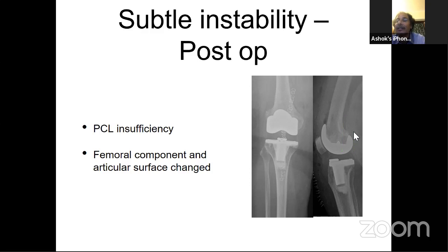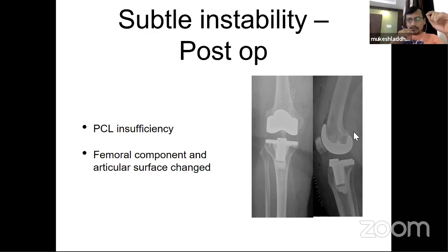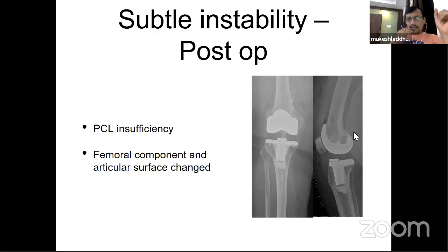I saw her about six weeks ago just before the COVID situation and she's really very happy with her outcome. One of the things I want to mention on this lateral view: when doing unconstrained revisions, one of the key components is to pick out the right size of your femoral component because that also takes care of your flexion gap — you basically upsize your femoral component.